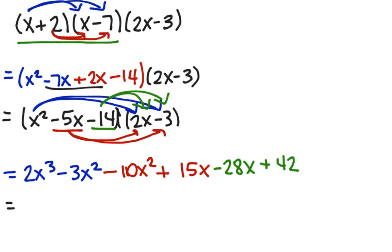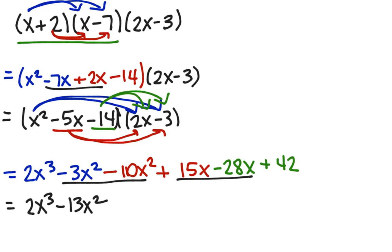Collecting like terms one last time: 2x cubed; negative 3x squared and negative 10x squared combine to negative 13x squared; positive 15x and negative 28x combine to negative 13x; plus 42. Thank you very much. Have a great day.